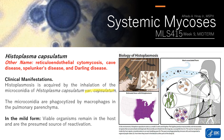In the host with intact immune defense, the infection is limited and can actually be asymptomatic, with only areas of calcification in the lung, liver, and spleen. There is also a possibility that the mild form can progress to chronic pulmonary histoplasmosis in patients with chronic obstructive pulmonary disease.